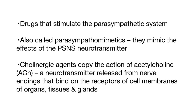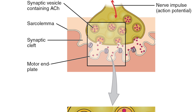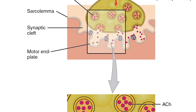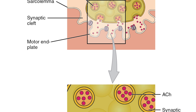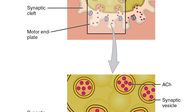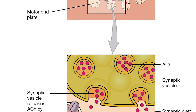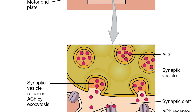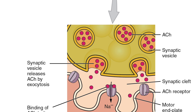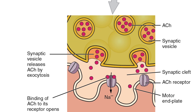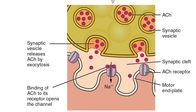Cholinergic agents are drugs that stimulate the parasympathetic system. They are also called parasympathomimetics, as they mimic the effects of the PSNS neurotransmitter. Cholinergic agents copy the action of acetylcholine, a neurotransmitter released from the nerve endings that binds on the receptors of cell membranes of organs, tissues, and glands.